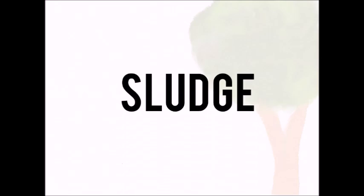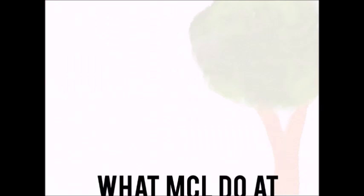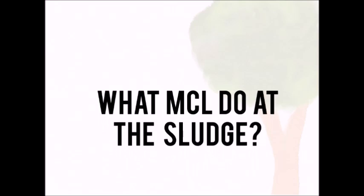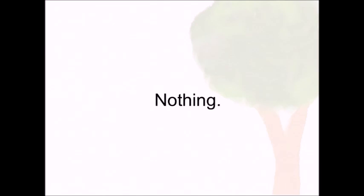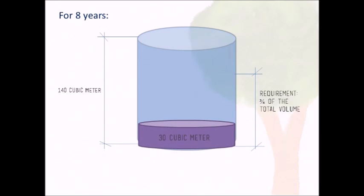The settled waste from the water treatment process is called sludge. What does the MCL engineering management do with the produced sludge? The answer is nothing, because from data gathered, the current volume of sludge produced in MCL's wastewater treatment facilities is about 30 cubic meters, almost a quarter of the total capacity of the treatment tank. The management has not done anything with the produced sludge for now.